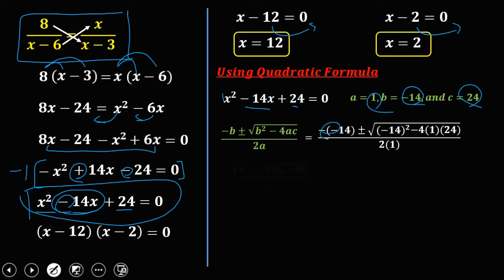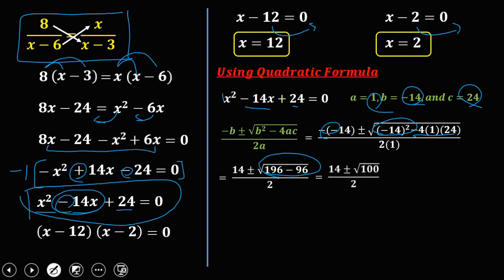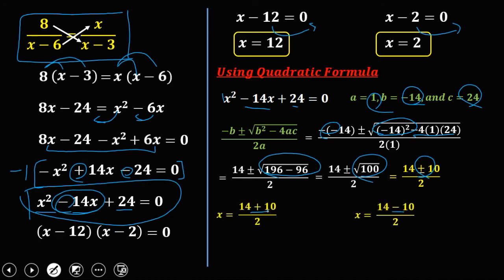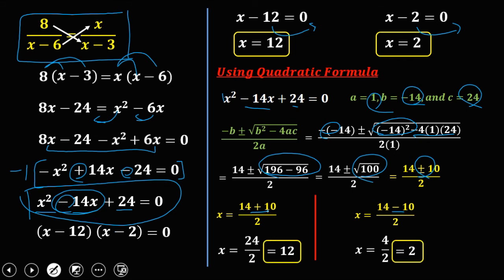Simplifying: the double negative gives positive 14. Negative 14 squared is positive 196, and 4 times 1 times 24 is 96. So 196 minus 96 is 100, and the square root of 100 is 10. Rewriting with plus and minus: 14 plus 10 over 2 equals 24 over 2, which is 12; and 14 minus 10 over 2 equals 4 over 2, which is 2. So x equals 12 and x equals 2 — the same result as factoring, just a different method.